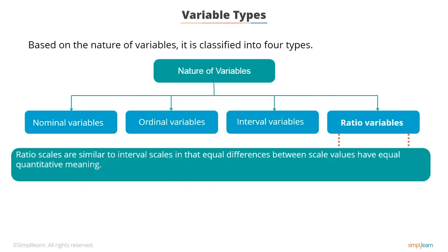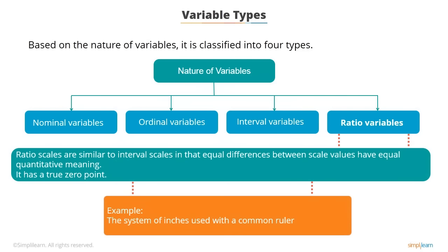Ratio scales are similar to interval scales in that equal differences between scale values have equal quantitative meaning; however, ratio scales also have a true zero point, which gives them an additional property. For example, the system of inches used with a common ruler is a ratio scale. There is a true zero point because zero inches does in fact indicate a complete absence of length.